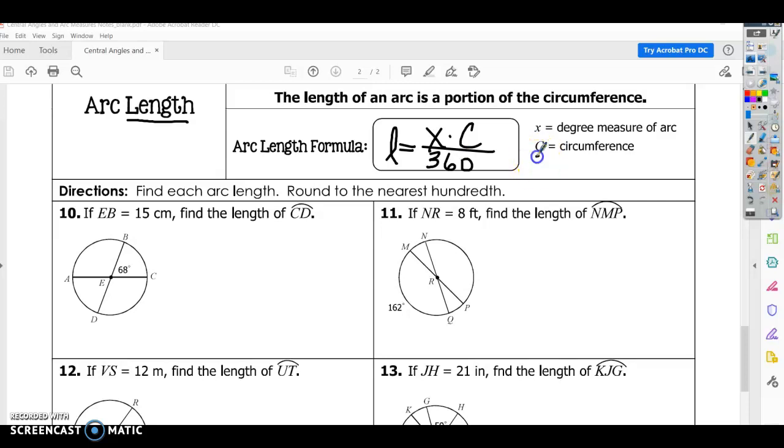You may want to write down circumference again. Every time you look at these makes it easier to remember. So circumference is 2 pi r or pi times diameter.